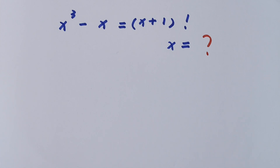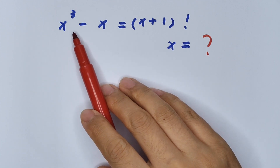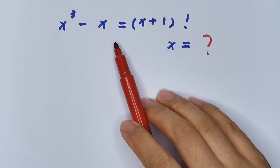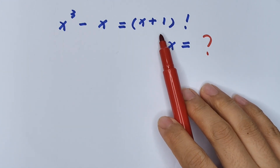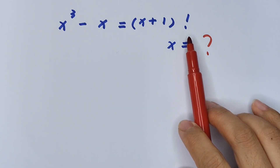Hello everyone, welcome to Math4U. How to solve x³ - x = (x + 1)! (x plus 1 factorial).